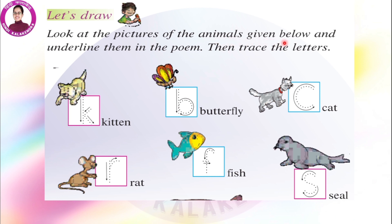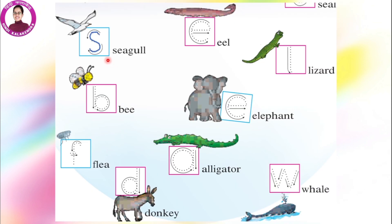Look at the pictures of the animals given below and underline them in the poem, then trace the letters. Kitten starts with K, butterfly starts with B, cat starts with C, rat starts with R, fish starts with F, seal starts with S, seagull also starts with S, eel starts with E, lizard starts with L, bee starts with B, elephant starts with E, flea starts with F, donkey starts with D, alligator starts with A, and finally whale starts with W.